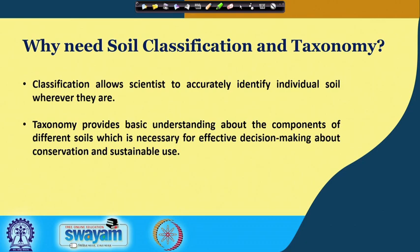It comes to our mind: why do we need soil classification and taxonomy? Classification always allows scientists to accurately identify individual soil wherever they are. Taxonomy provides a basic understanding about the components of different soils, which is necessary for effective decision making about conservation and sustainable use.